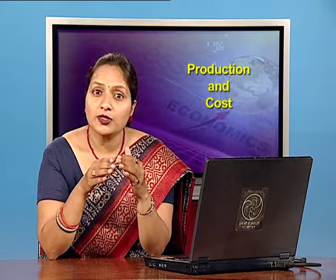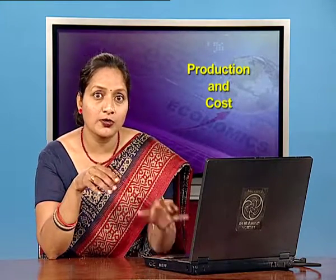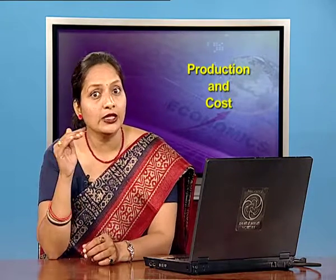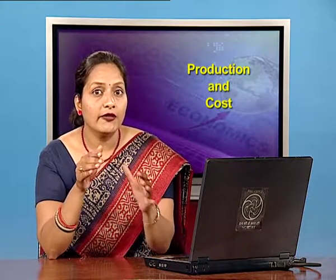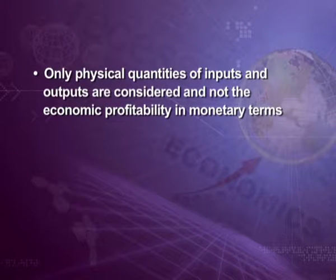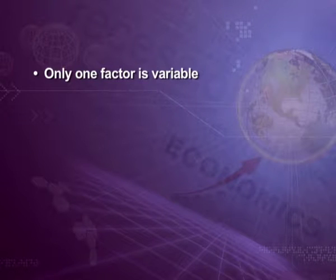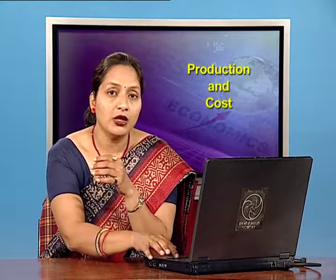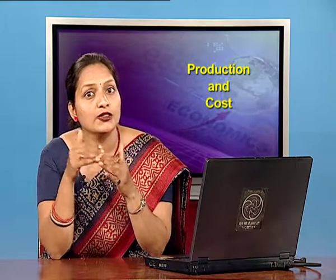This short run law is based on certain assumptions. Number one: the state of technology is given and remains unchanged, because if there is any improvement in technology, then marginal and average product may rise instead of falling. Second assumption: only physical quantities of inputs and outputs are considered and not the economic profitability in monetary terms. Third assumption: only one factor is variable; this law does not apply to cases when all factors of production are proportionately changed to increase units of output.